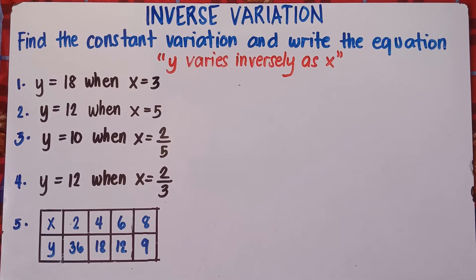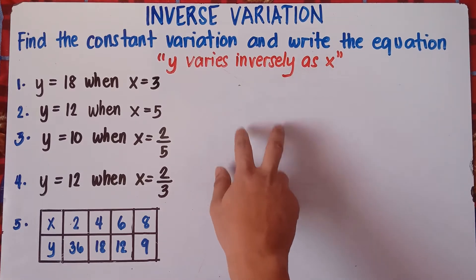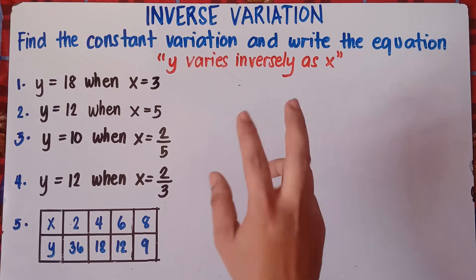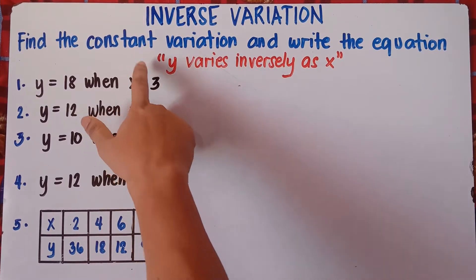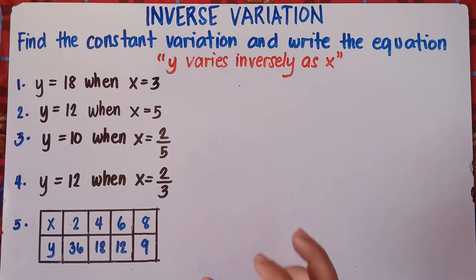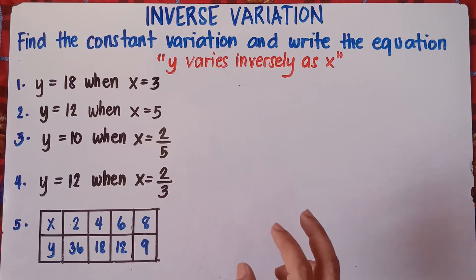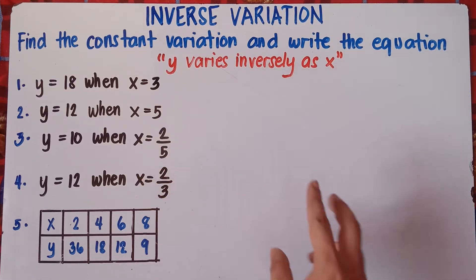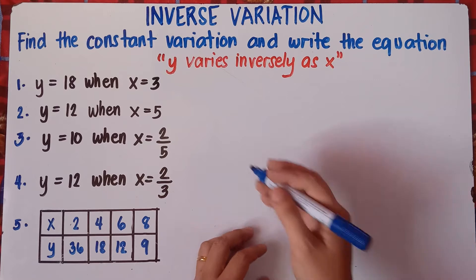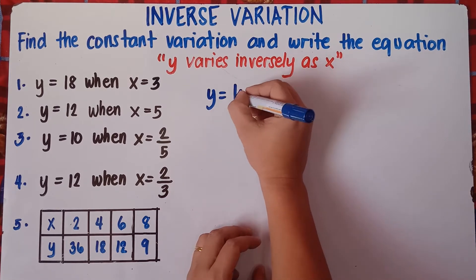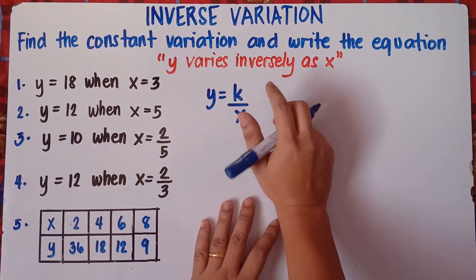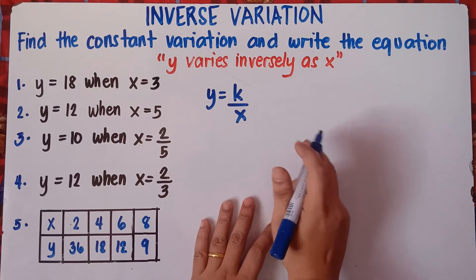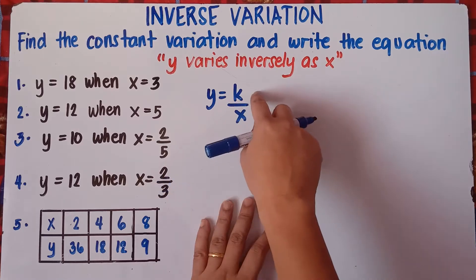We are told to find the constant variation and to write the equation, given that y varies inversely as x. To write the equation, we need to find the constant variation — we need to find k. And once we get k, just simply substitute k into the given equation. Now if you have y varies inversely as x, you can write this as y equals k over x. If you have the word 'inversely,' there's something to do with division, so that's why you have y equals k over x.